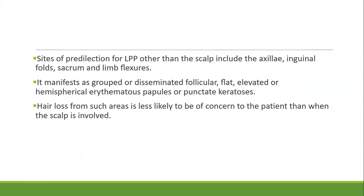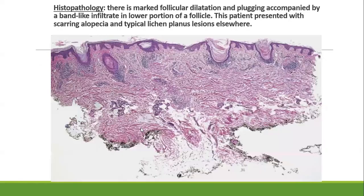On the body, lichen planopilaris manifests as grouped or disseminated follicular, flat, elevated, or hemispherical erythematous papules or punctate keratosis. Hair loss from such areas is less likely to be of concern to patients than when the scalp is involved.